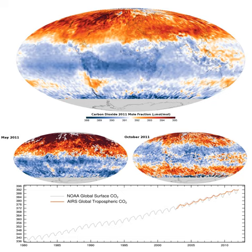Higher atmospheric CO2 concentrations are found in the Northern Hemisphere, where most of the world's population lives and emissions originate, compared to the Southern Hemisphere. This difference has increased as anthropogenic emissions have increased. Additionally, atmospheric O2 levels are decreasing in Earth's atmosphere as it reacts with the carbon in fossil fuels to form CO2.